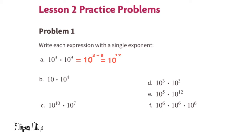Part B: 10 times 10 to the power of 4. That's the same as 10 times 10 four more times, for a total of 10 multiplied five different times. The first 10 is really 10 to the power of 1, so an exponent of 1 plus an exponent of 4 equals an exponent of 5. This would be 10 to the power of 5.